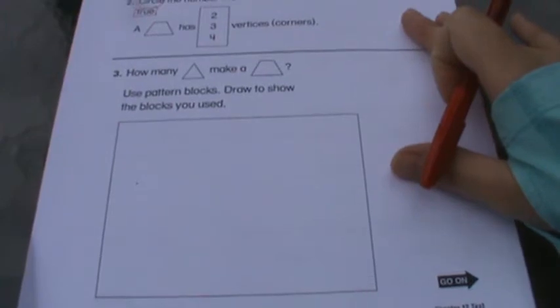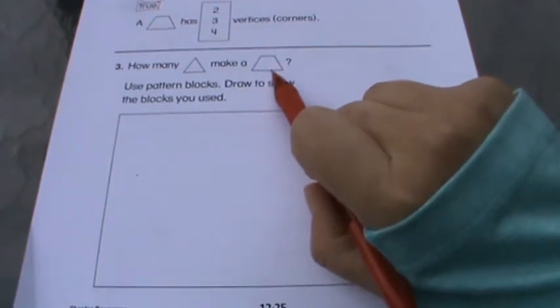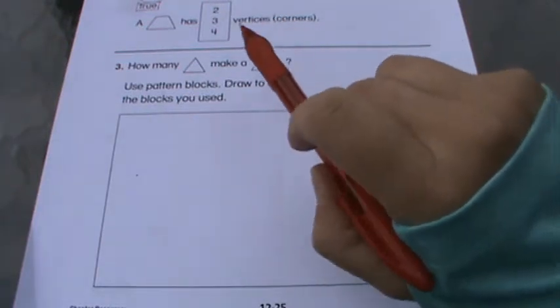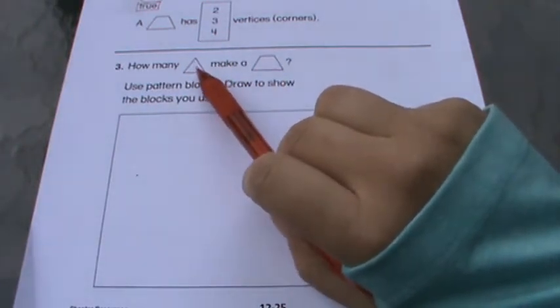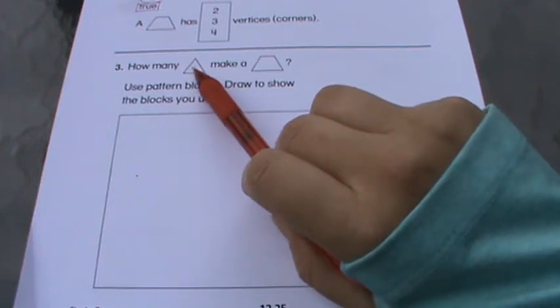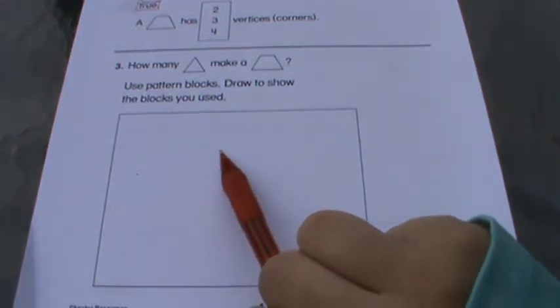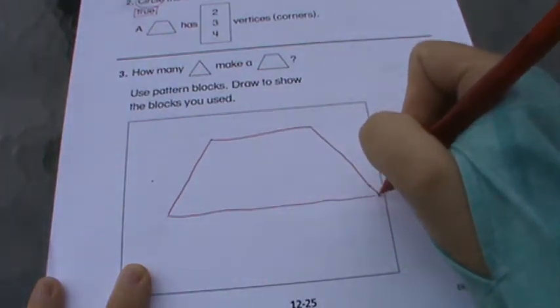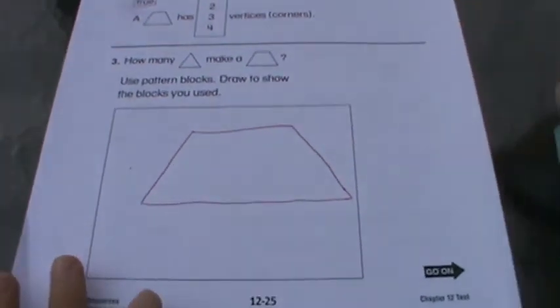Number three, how many triangles make a trapezoid? Get out those pattern blocks if you need to. Lay them out. Draw it out if you need to. But make sure that you are making sense of this. So get out a trapezoid and then lay down those triangles on top of it and see how many triangles it takes to make a trapezoid. Because then you're going to come down here and you're going to draw to show the blocks that you used. So you need to go ahead and draw the trapezoid and then you're going to draw your lines to show me how many of those triangles are in there.